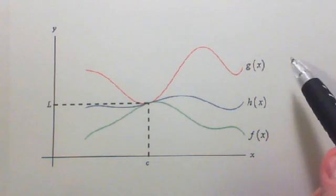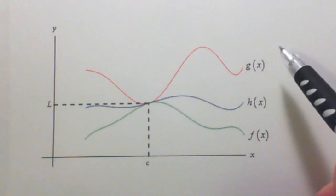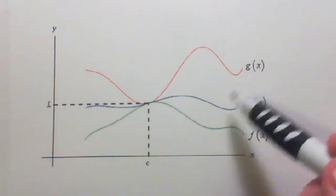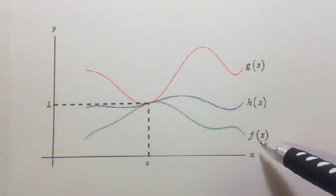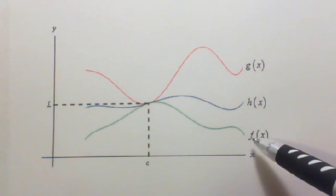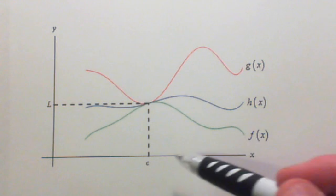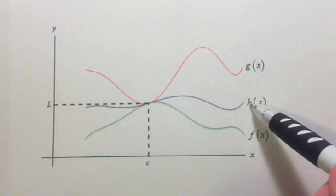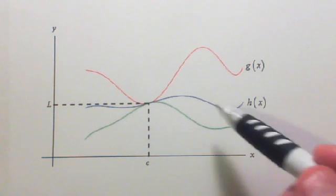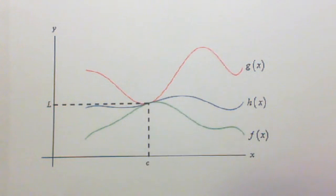So what the squeeze theorem basically says is this: if I can find the limit of g(x) as x approaches c and it equals L, and I can also take another function and take the limit of that function as x approaches c and it also goes to L, then I know that my middle function that's between these two must also approach L as x approaches c. Let's look at some problems because it makes a lot more sense when you work problems.